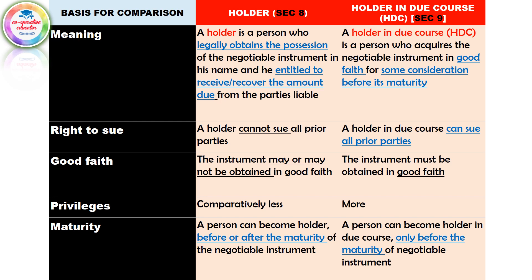Now, if you have a card, you will check the Holder. If you have two conditions satisfied, then you will need to receive the amount. These two conditions are: who acquires the Negotiable Instrument in good faith for some consideration before its maturity. Good faith is needed, and some consideration is needed. The employee has a salary and has a check — that is why there is consideration.